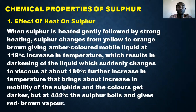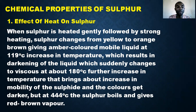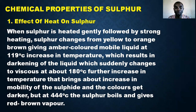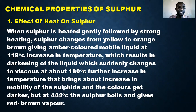Now, the chemical properties of sulfur — specifically the effect of heat. When sulfur is heated gently followed by strong heating, sulfur changes from yellow to orange to brown, giving an amber-colored mobile liquid at 119 degrees Celsius. An increase in temperature results in darkening of the liquid, which suddenly becomes viscous at about 180 degrees Celsius.